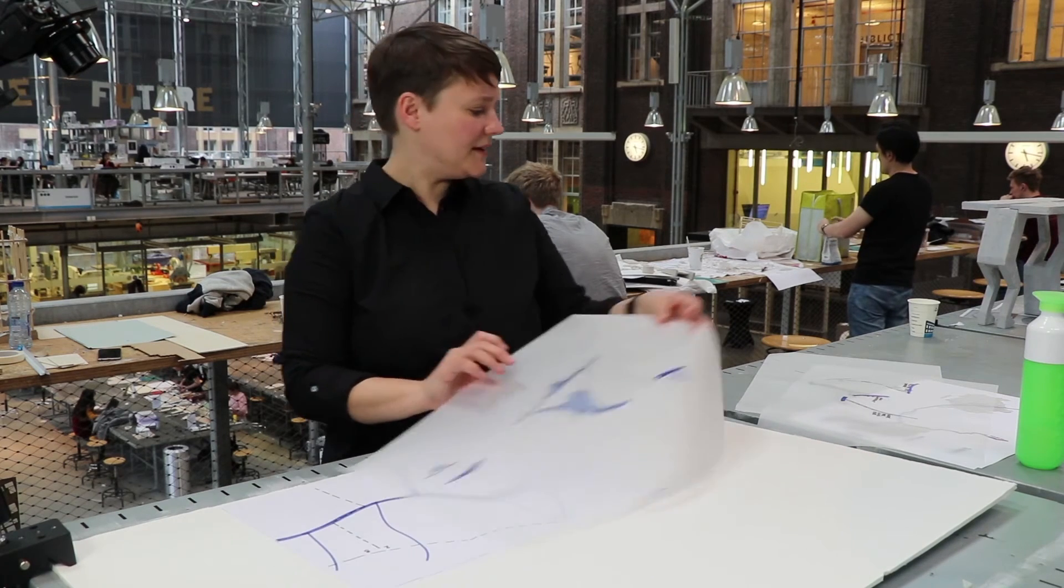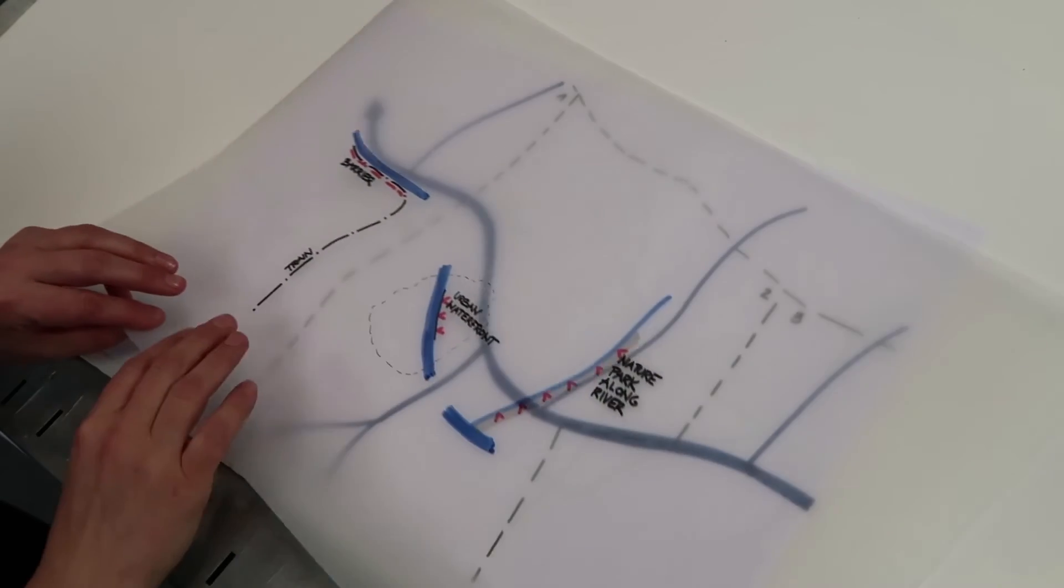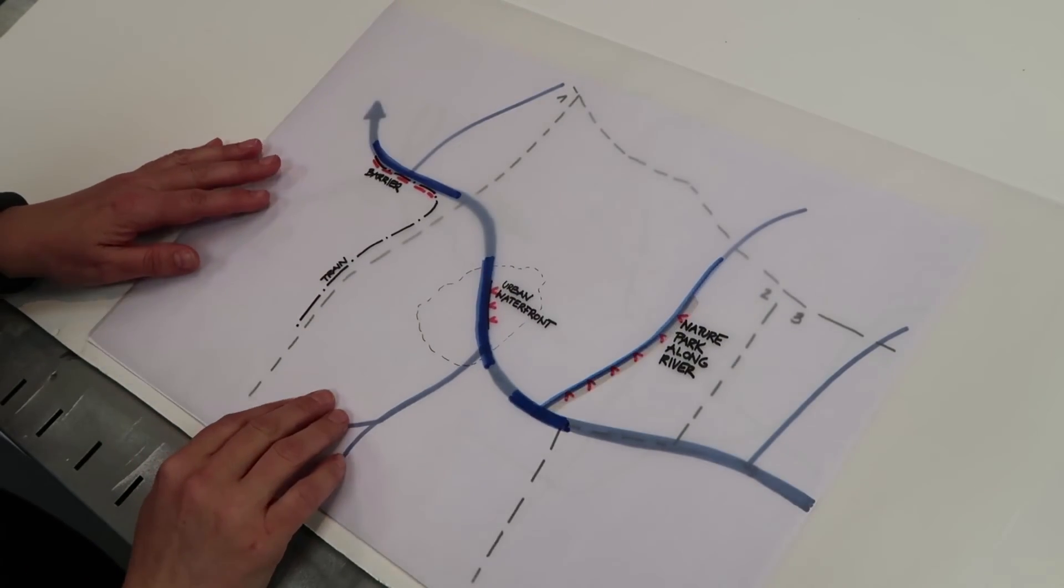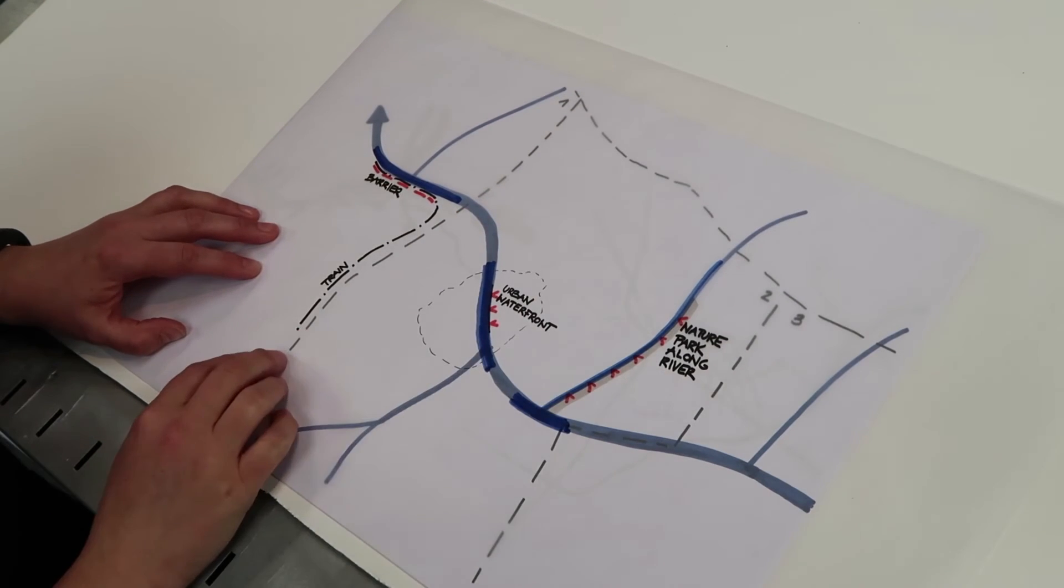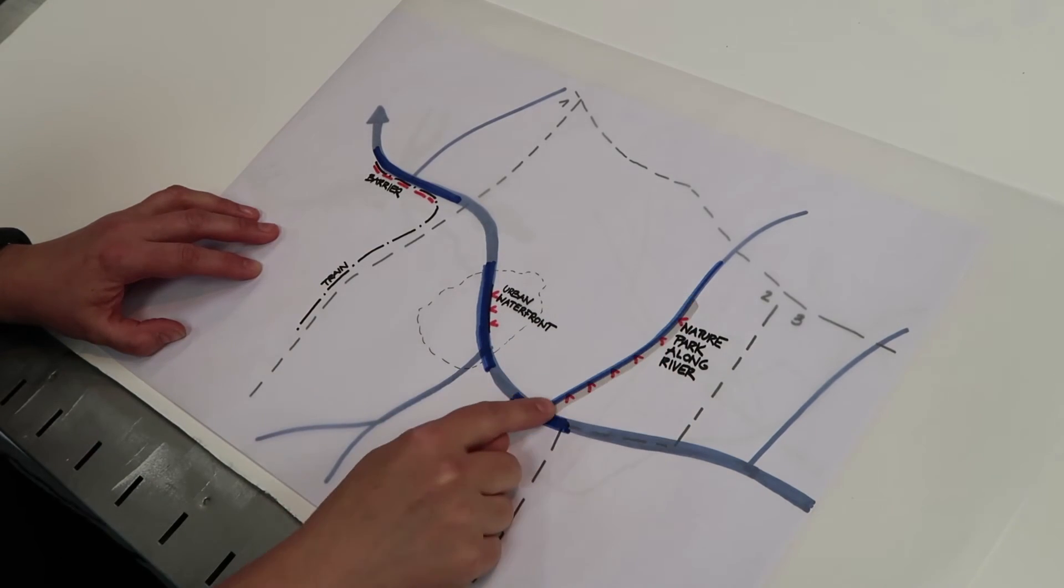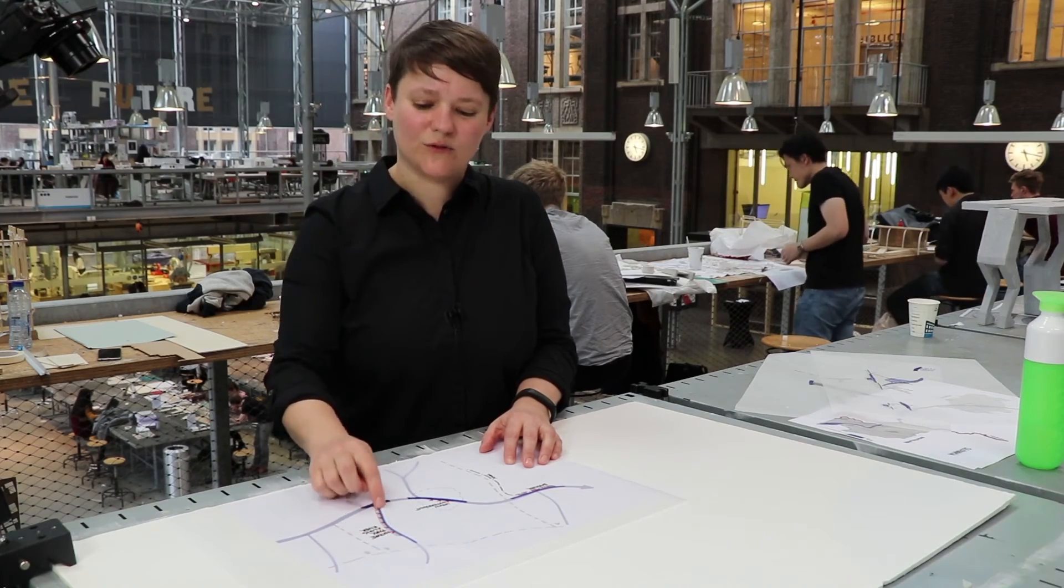Looking at another example on how governance units or governance influences design could be how we deal with the edge of the river. Looking at the first example here, we could design a nature park along the river, which gives good access to the residents, whoever lives next to the river.